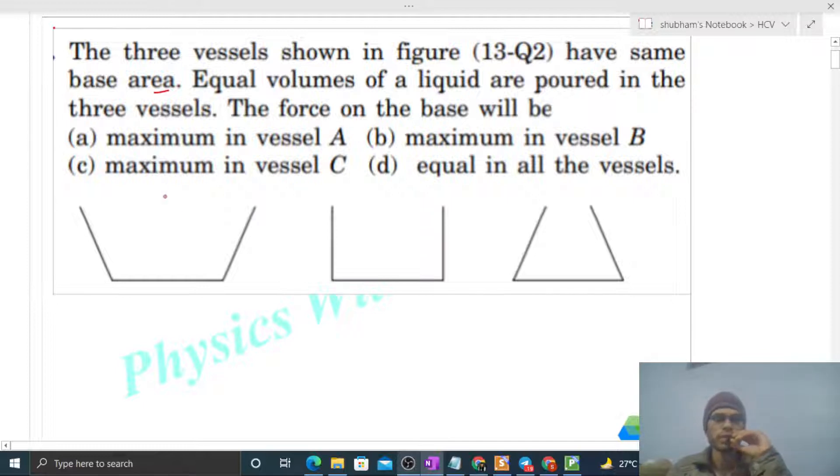So we have three vessels. Let's say vessel 1, vessel 2, and vessel 3. In each case, the base area is the same, let's say capital A. And equal volume of a given liquid is poured. Let's say V is the volume.